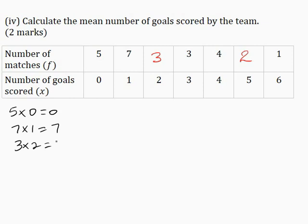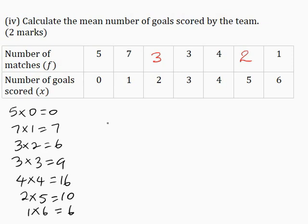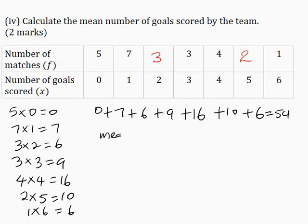3 multiplied by 2 is 6, 3 multiplied by 3 is 9, 4 multiplied by 4 is 16, 2 multiplied by 5 is 10, and 1 multiplied by 6 is 6. So I can say here that 0 plus 7 plus 6 plus 9 plus 16 plus 10 plus 6 is equal to 54 goals. And I could say here that the mean is equal to 54 divided by the 25 matches that was played and I'm getting a mean of 2.16 goals.